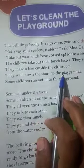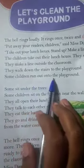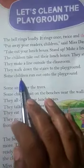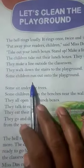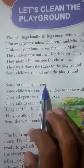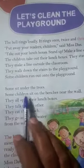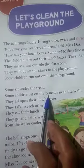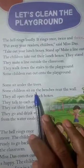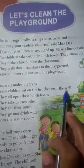वे सीड़ियों से मैदान की ओर जाते हैं. Some children run out on to the playground — कुछ बच्चे मैदान में भागते हैं. Some sit under the trees — कुछ पेड़ के नीचे बैठते हैं. Some children sit on the benches near the wall — कुछ बच्चे उस bench पर बैठ जाते हैं जो दीवार के पास है. Wall means दीवार.